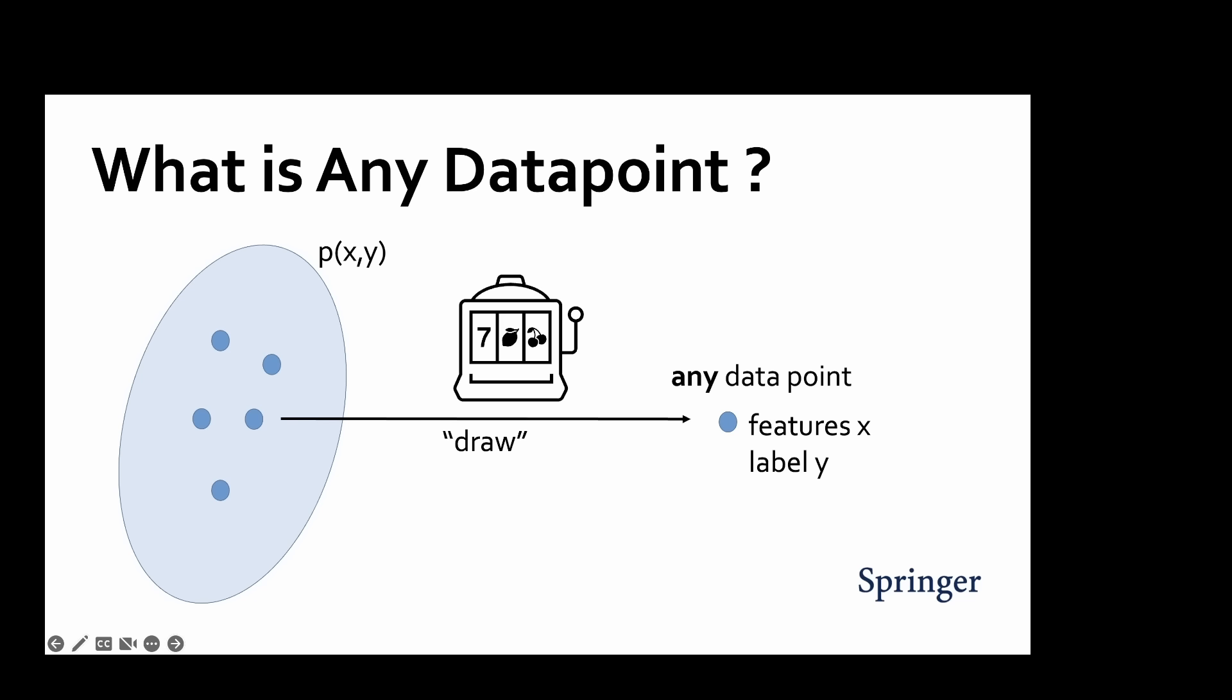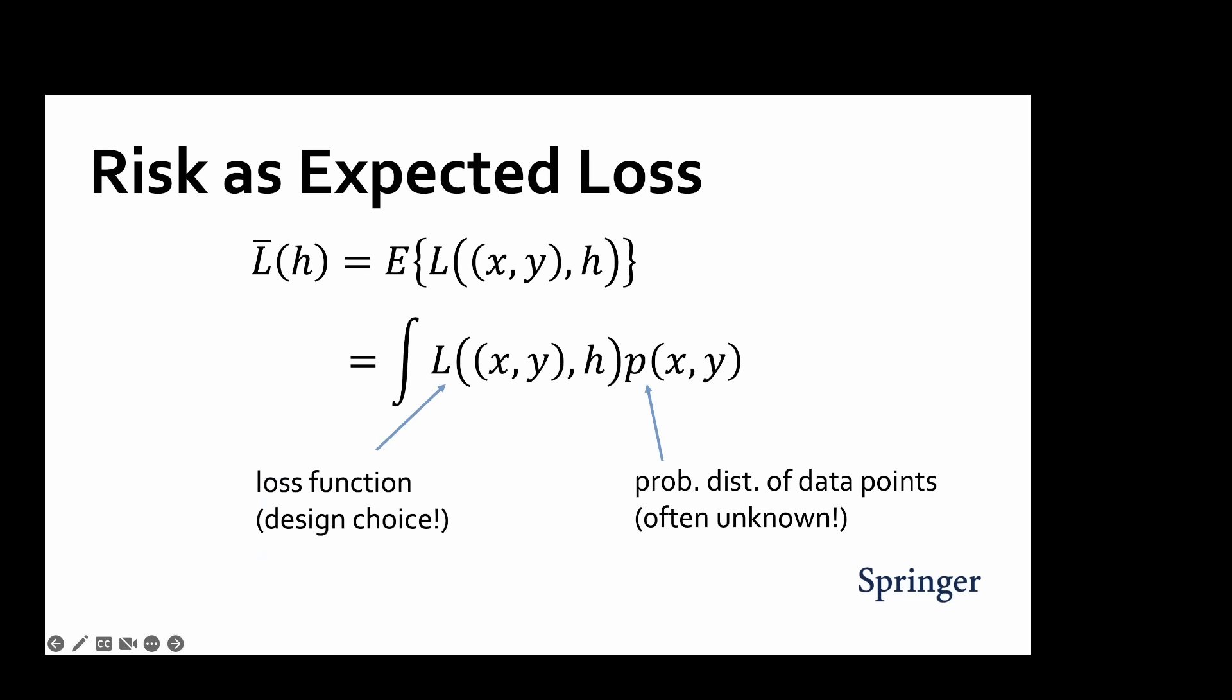Mathematically speaking, data points then become realizations of random variables. As soon as we interpret data points as realizations of a random variable, any function of a data point becomes also the realization of a random variable.